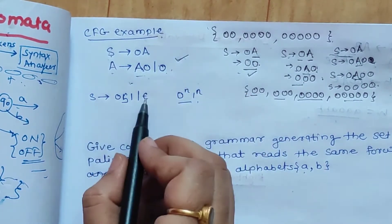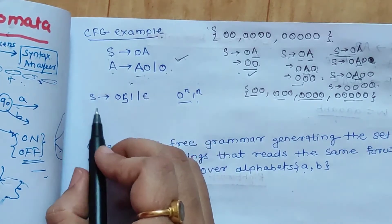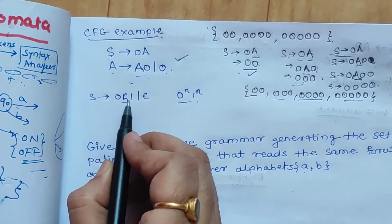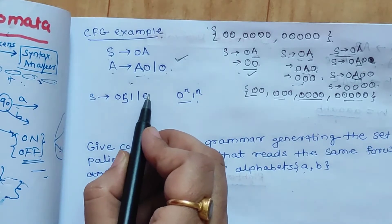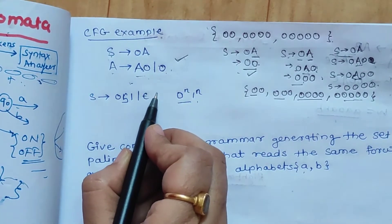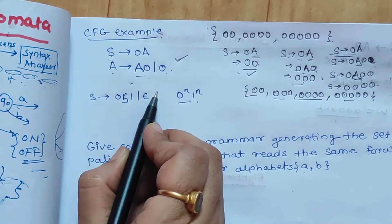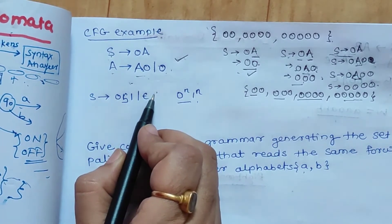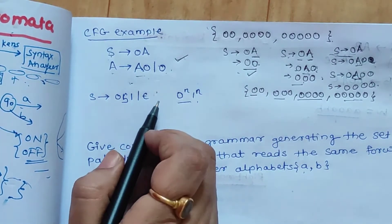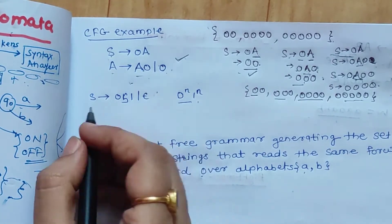Now we will discuss one more example. Another grammar is given: S gives 0S1 or epsilon. Epsilon is the null symbol — that is, you put nothing at the place of epsilon. We will see what kind of language is generated with this grammar.